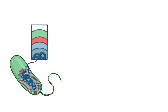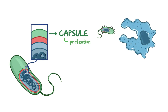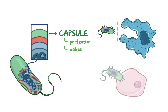Some bacteria are covered by a capsule, which acts as a shield that protects the bacteria against phagocytosis and also helps the bacteria adhere to surfaces. The capsule is considered an important virulence factor, since the strains that lack a capsule are less virulent.